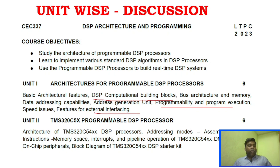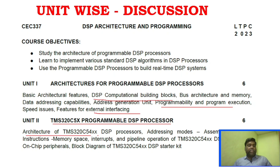Unit 2 covers the TMS320C5X Programmable DSP Processor. In this unit, key areas include the Architecture of the processor, Addressing Modes, and Pipeline Operation of the processor.